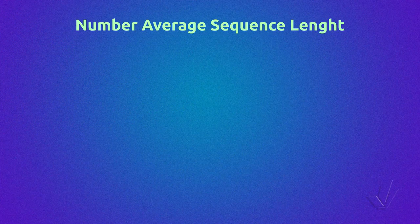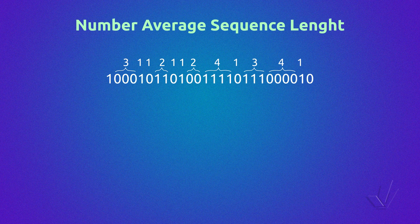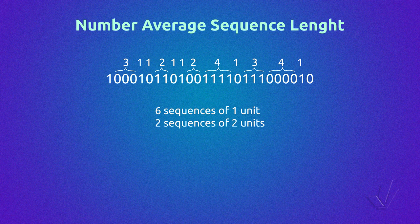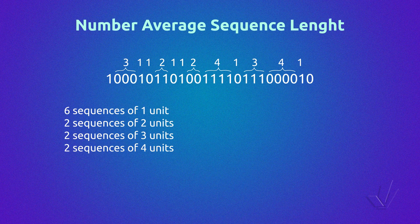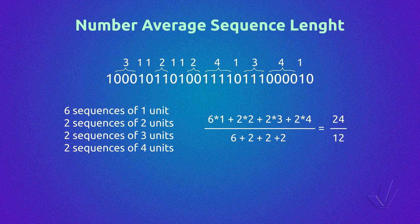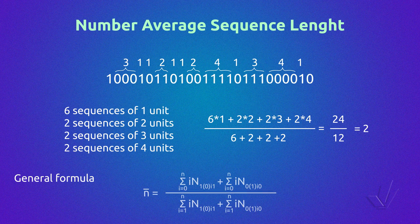More information about the number average sequence length: if we have two monomers, 0 and 1, in this example we have six sequences of one unit, two sequences of two units, two sequences of three units, and two sequences of four units. The number average sequence length is given by the product of the number of sequences of each type by the number of units, divided by the sum of the number of sequences, as it is shown in those equations.